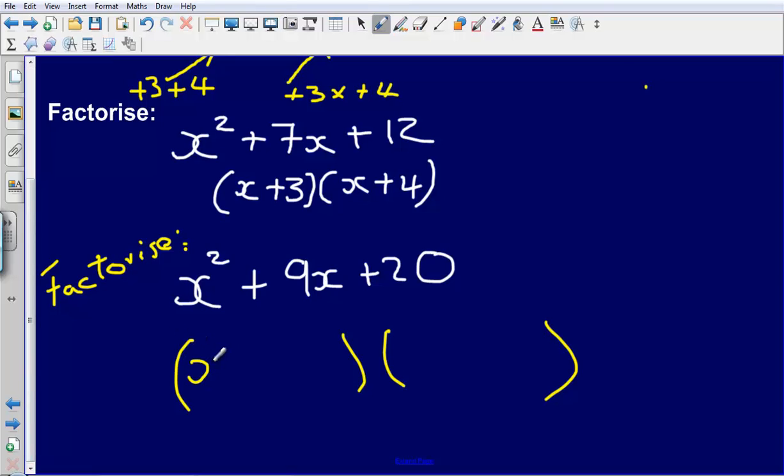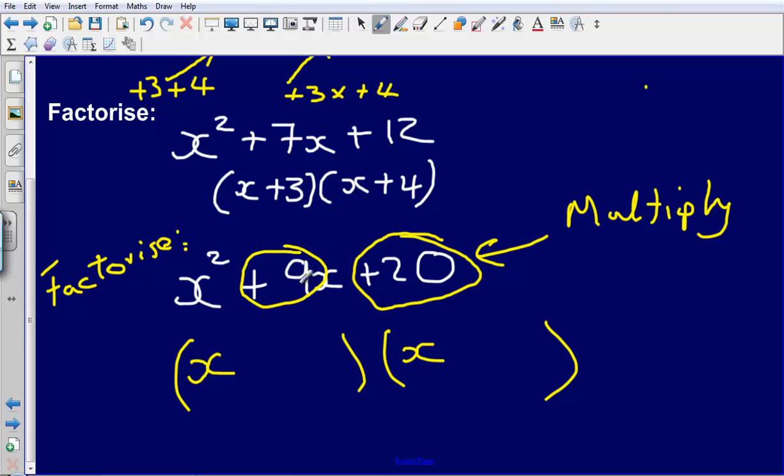So what I can do is I can put my x and my x in double brackets. Now we need to find two numbers that will multiply to make this number on the end but will add to make plus 9.